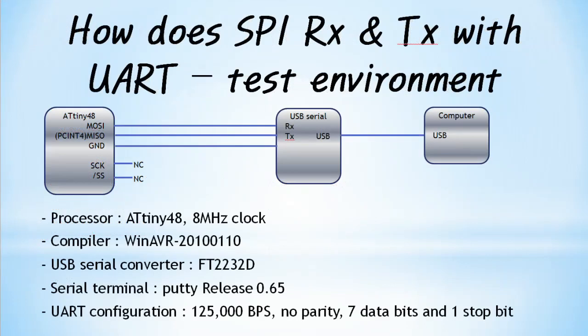The environment for testing bidirectional communication with UART using SPI is shown in the figure. In the case of the ATtiny48, the MISO/PCINT4 function is assigned to PB4, so PCINT4 will be used for detecting the start bit. If PCINT is optimized, bidirectional communication is possible at 500,000 BPS.